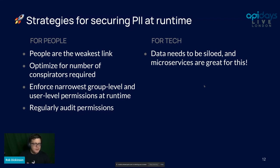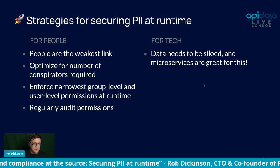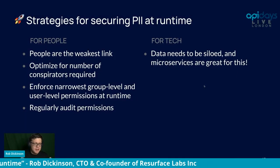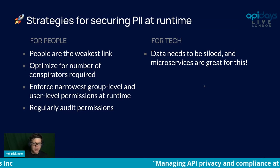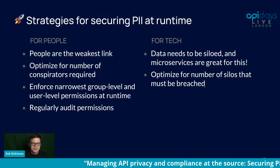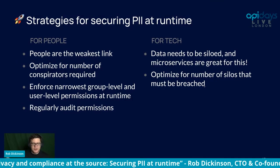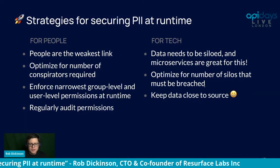On the tech side, think about siloing data — breaking it into multiple pieces rather than having all data in one giant honeypot database. APIs and microservices are great for siloing this data. Yes, it adds complexity and granularity, but you're creating more silos for data to live in and making it harder to compromise every silo simultaneously. Optimize for the number of silos that have to be breached — the more silos, the greater the chances you'll get caught.